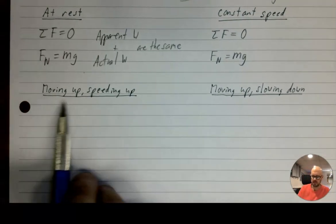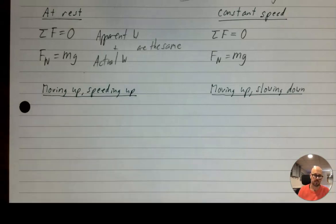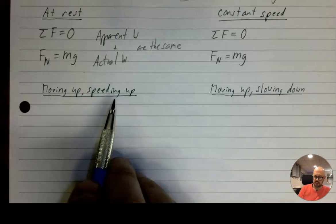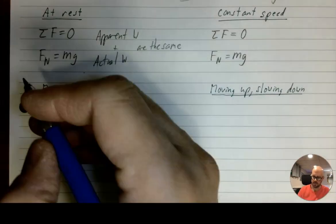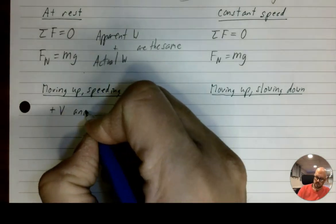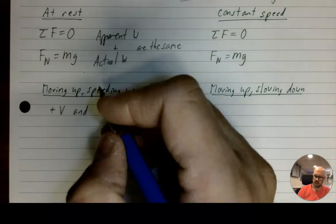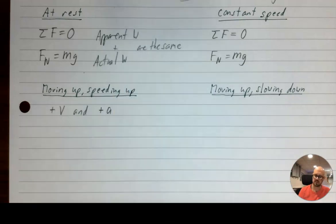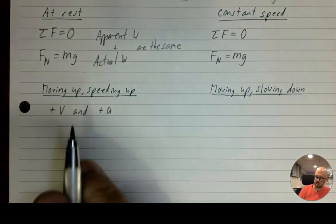If you get in an elevator at the ground floor, the first thing that happens is you move upward and you speed up as soon as you start moving. We're going to use kinematics here: moving upwards — if up is the positive direction, then that's a positive velocity. If you are speeding up, then your positive velocity is getting larger, and so that is a positive acceleration. So you start with a positive velocity and that positive velocity increases.